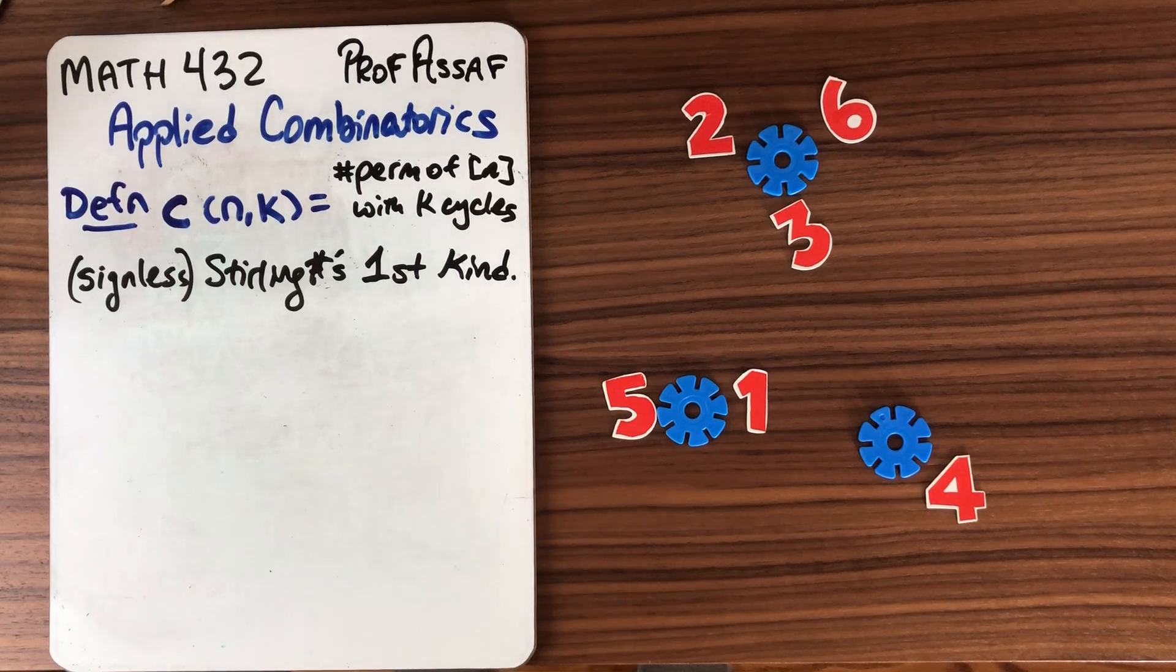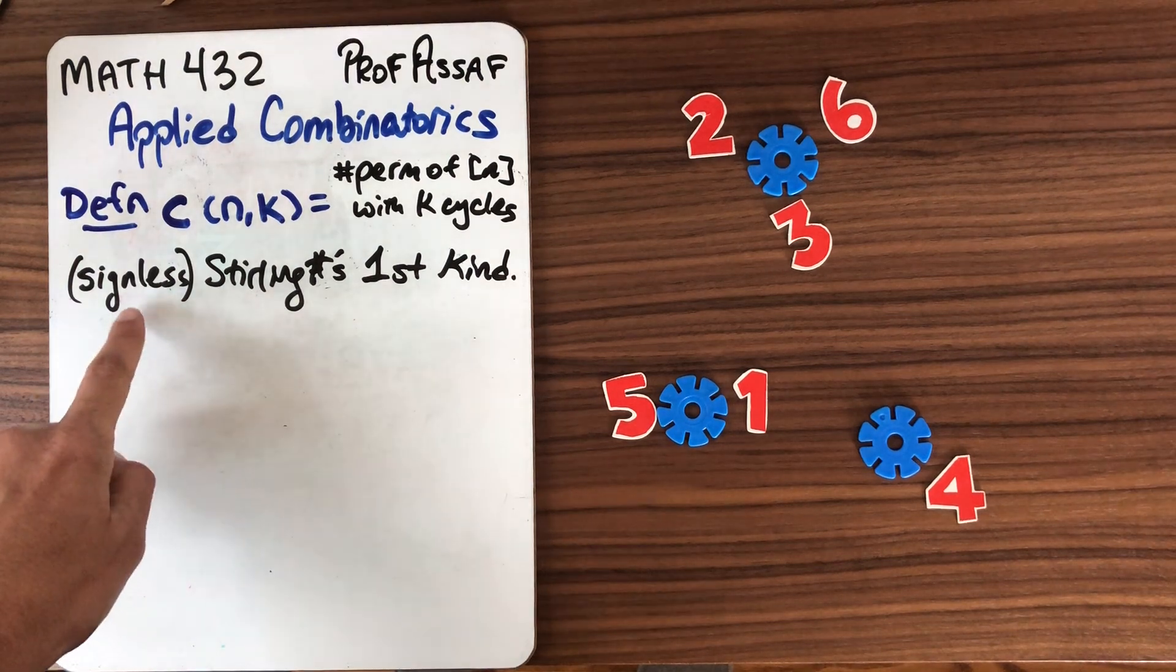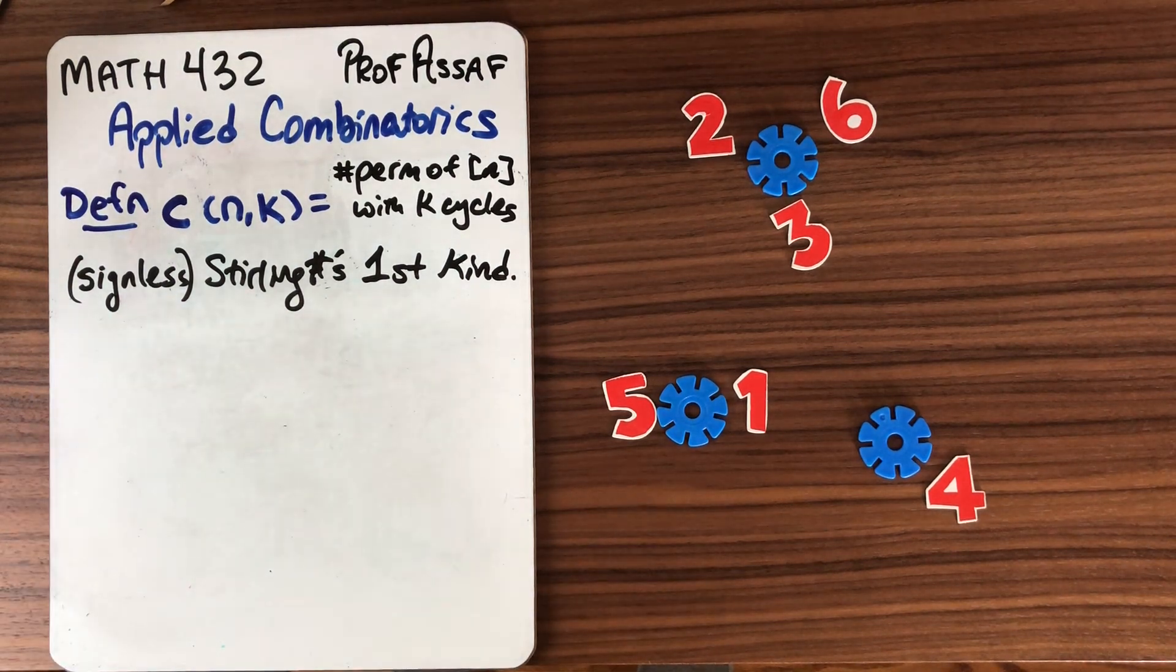So we talked about the Stirling numbers of the second kind. Now let's back up and talk about Stirling numbers of the first kind. I'm going to give you the signless variation first and we'll talk about the signed one next.